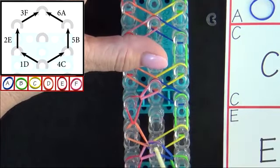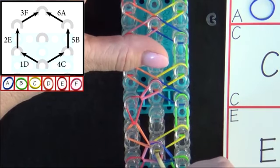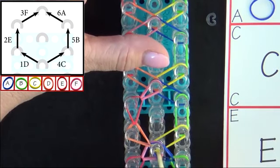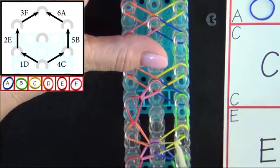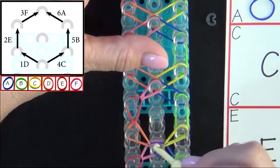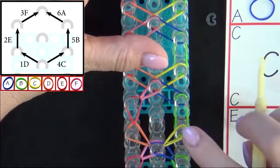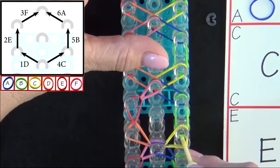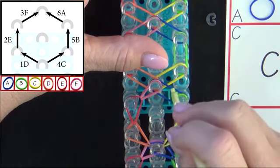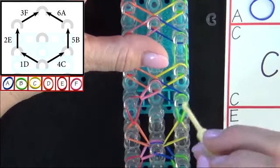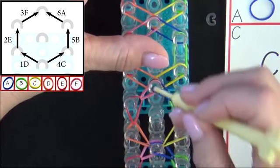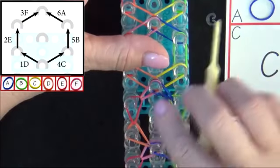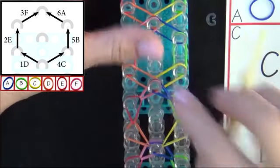And then we return to the beginning of this hexagon. We'll loop band 4C to the right. Pull all the bands above the C band back. Grab it with your hook and pull out to the right. Band 5B will be looped forward. You pull those bands back and pull that forward. 6A will be looped to the center.